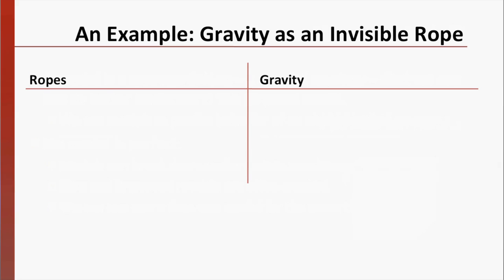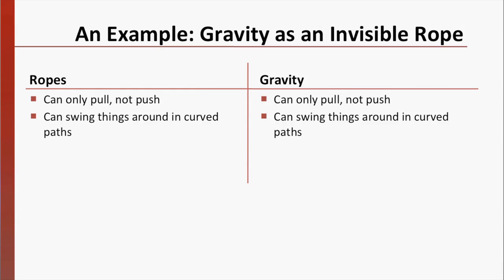To give an example, imagine describing gravity as an invisible rope holding objects together. There are several good things about this model. Ropes can only pull, not push, and this is true for gravity. Ropes can be used to swing objects in curved paths, the same way that gravity makes the planets move in curved paths.